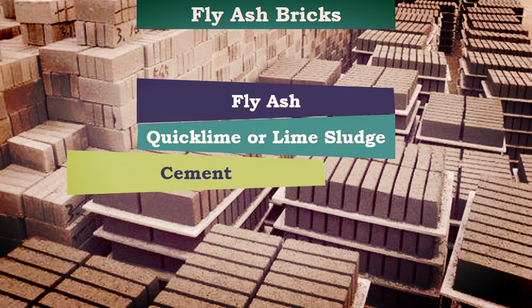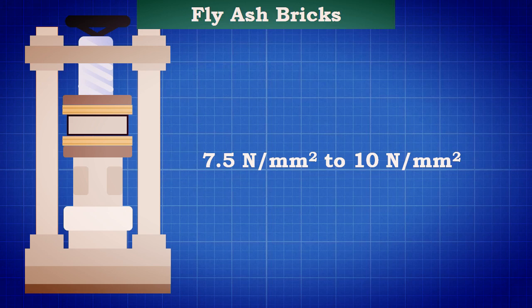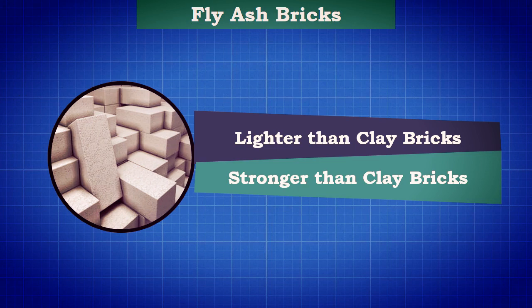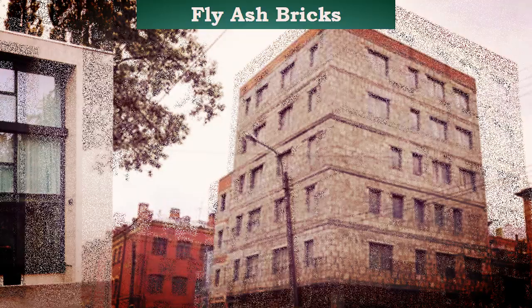Fly ash bricks: these bricks are made from class C or class F fly ash. The main ingredients include fly ash, quicklime or lime sludge, cement, aluminium powder, and gypsum. The compressive strength is normally in the order of 7.5 to 10 Newton per millimeter square. Fly ash bricks are lighter and stronger than clay bricks and are used in cost-effective and eco-friendly construction.